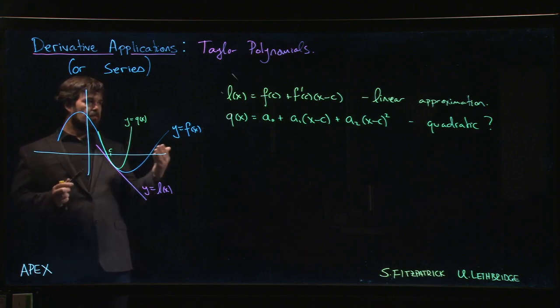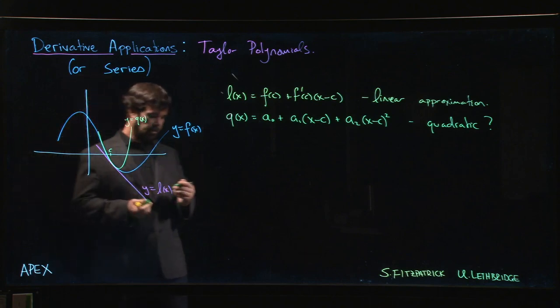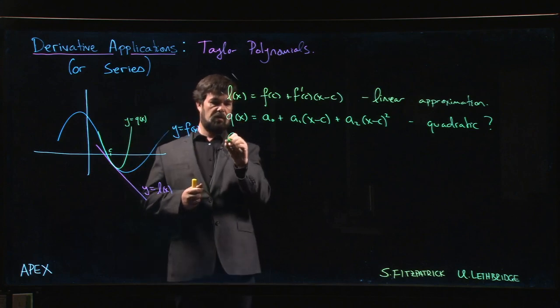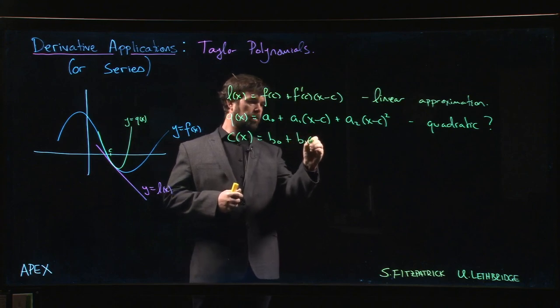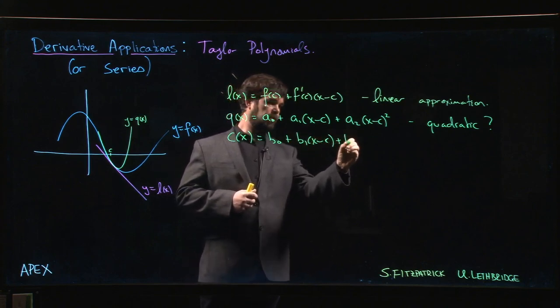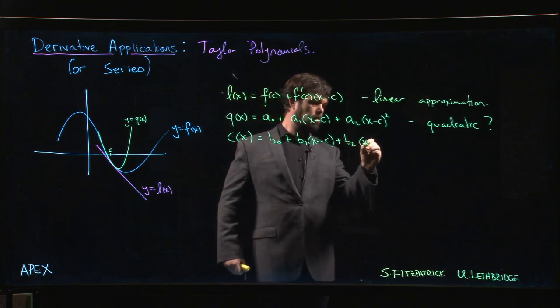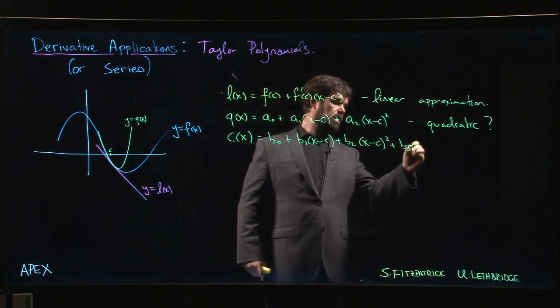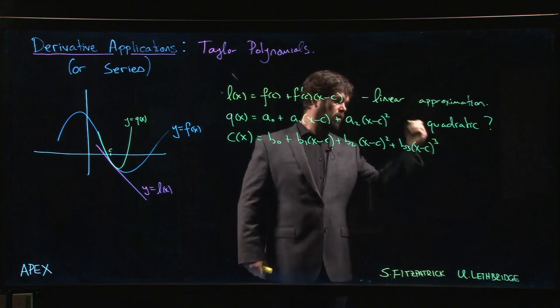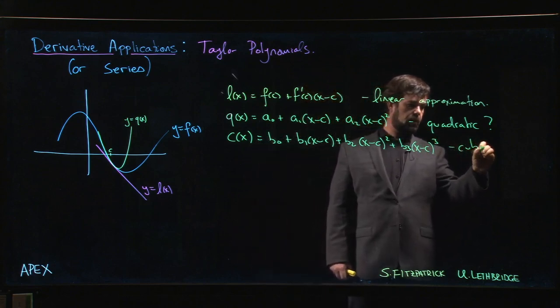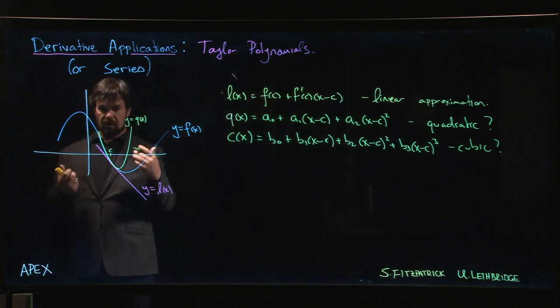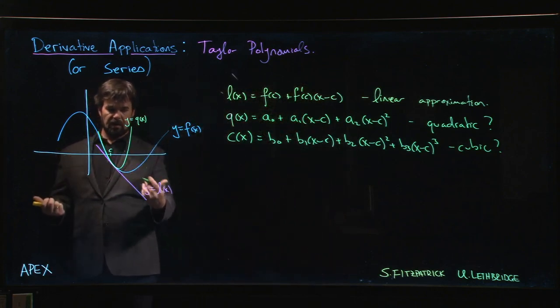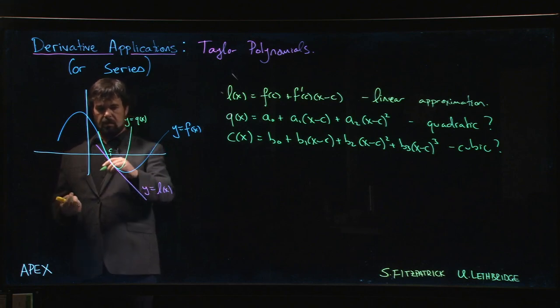Maybe you can go to cubic. Maybe there's a c(x), so there's like a b₀ + b₁ + b₂ + b₃ times (x - c)³. Maybe there's a cubic. What's that going to look like? You play around and you try to figure this out: can we make these approximations, and how are they going to look?